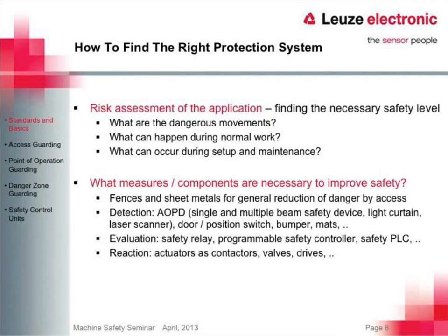We need to determine what measures and components are necessary to improve safety on the machine. Is it going to be fences and sheet metal for general reduction to keep somebody out? Or are we going to look for a detection-based solution, which would be an AOPD — an active optoelectronic protective device — typically a light curtain, multi-beam, or a safety scanner? The components that go along with that include a safety relay or safety controller, actuators, and contactors for the valves and drives. There's a lot that goes into the safety-related portion of the control system.